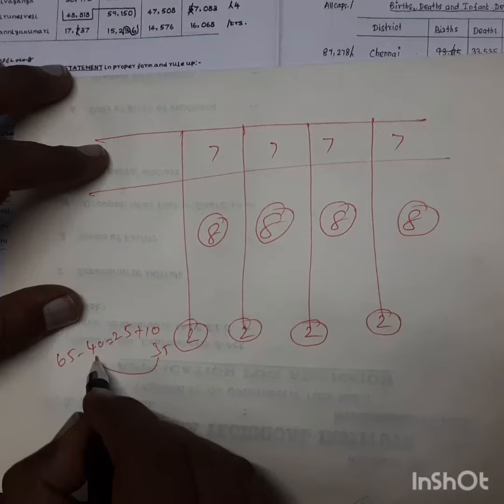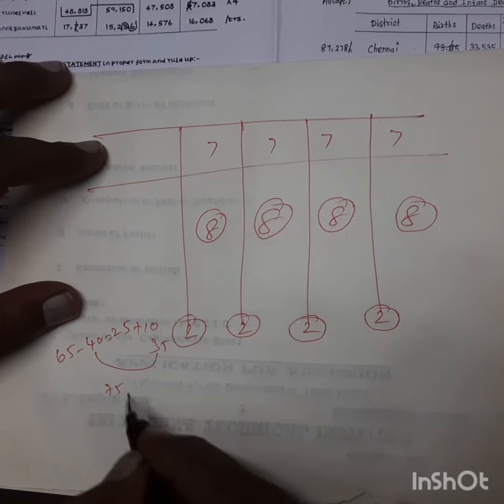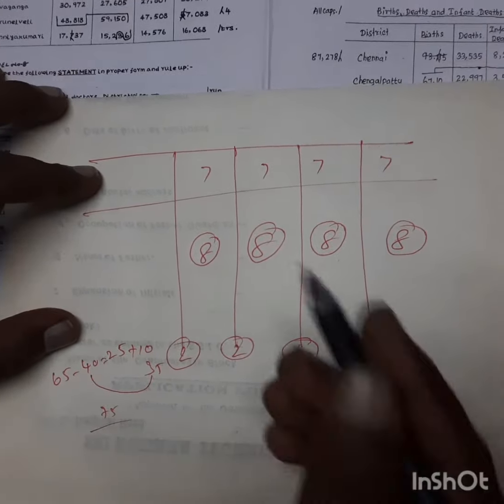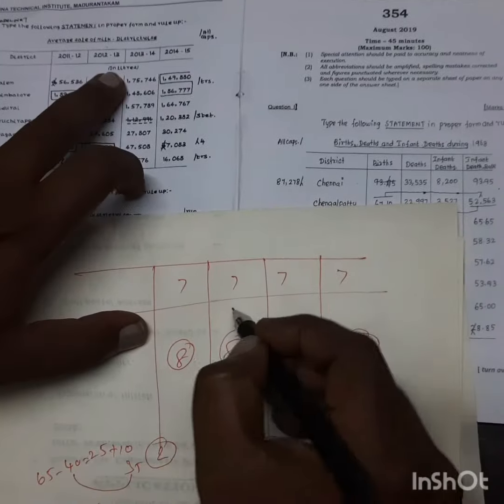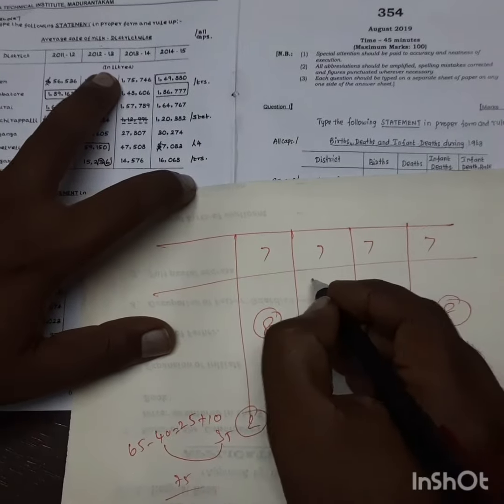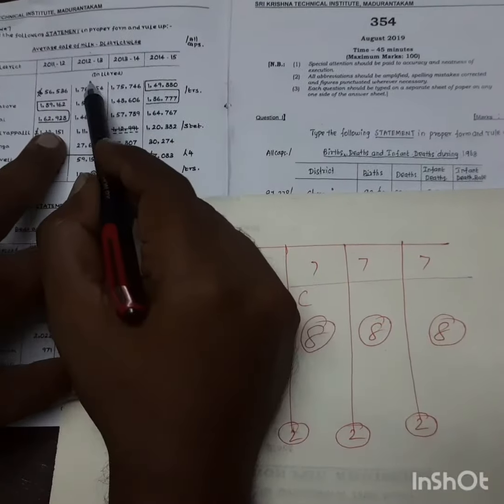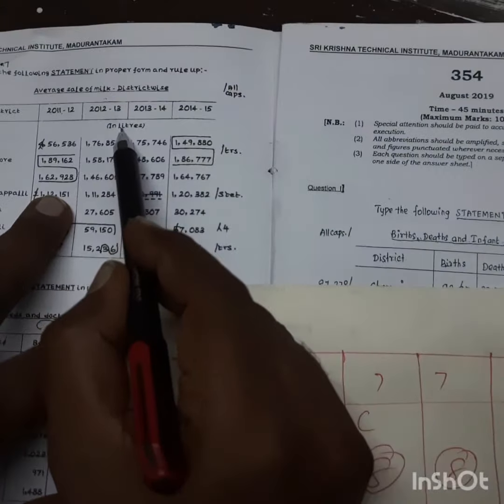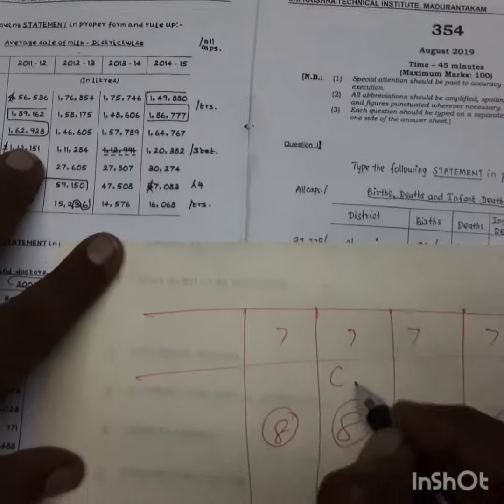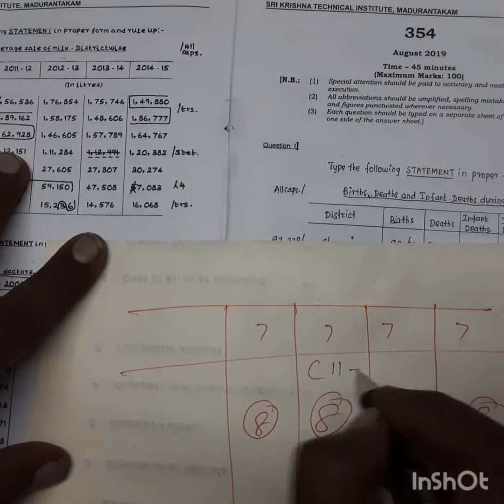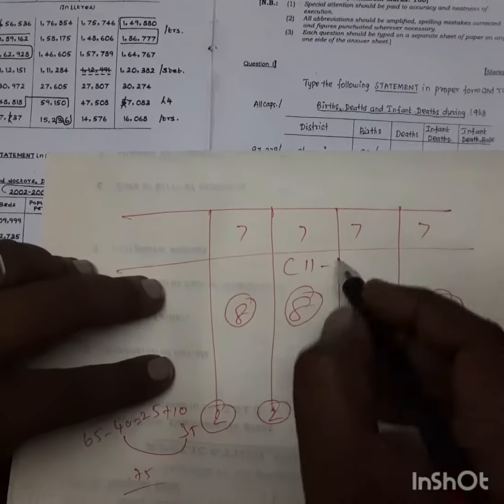35, 75. Now we calculate. 1, 2, 3, 4, 5, 6, 7, 8, 9, 10, 11. There are 11 letters. Minus round is 8.